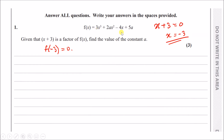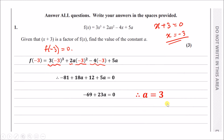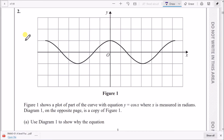Replace all x values with -3 wrapped in brackets. Evaluate in a calculator: the first term becomes -81, the second becomes 18a, then plus 12, and plus 5a. Collecting like terms: -81 + 12 = -69, and the a terms give 23a. Setting this to zero: 23a = 69, so dividing by 23 gives a = 3.